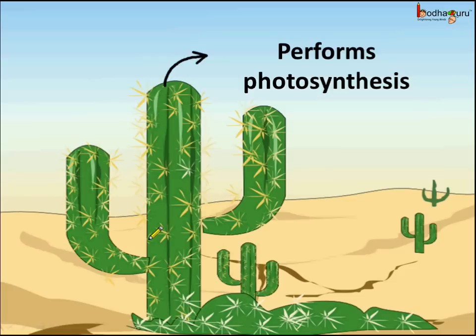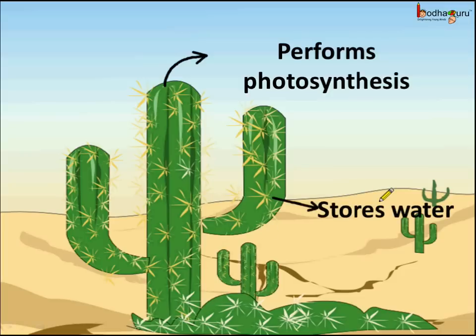Not only this, as the water is scarce, the stems also store water. So the stems store water too. And what about the leaves? The leaves are reduced to spines so that the loss of water is minimum due to transpiration.